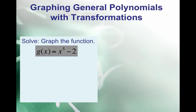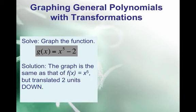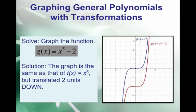Let's consider g(x) = x⁵ - 2. It's our plain old f(x) = x⁵ with that minus 2 translating the function down 2 units. We can see in the graph how the blue basic function simply shifted down 2 units — each coordinate moves down 2.